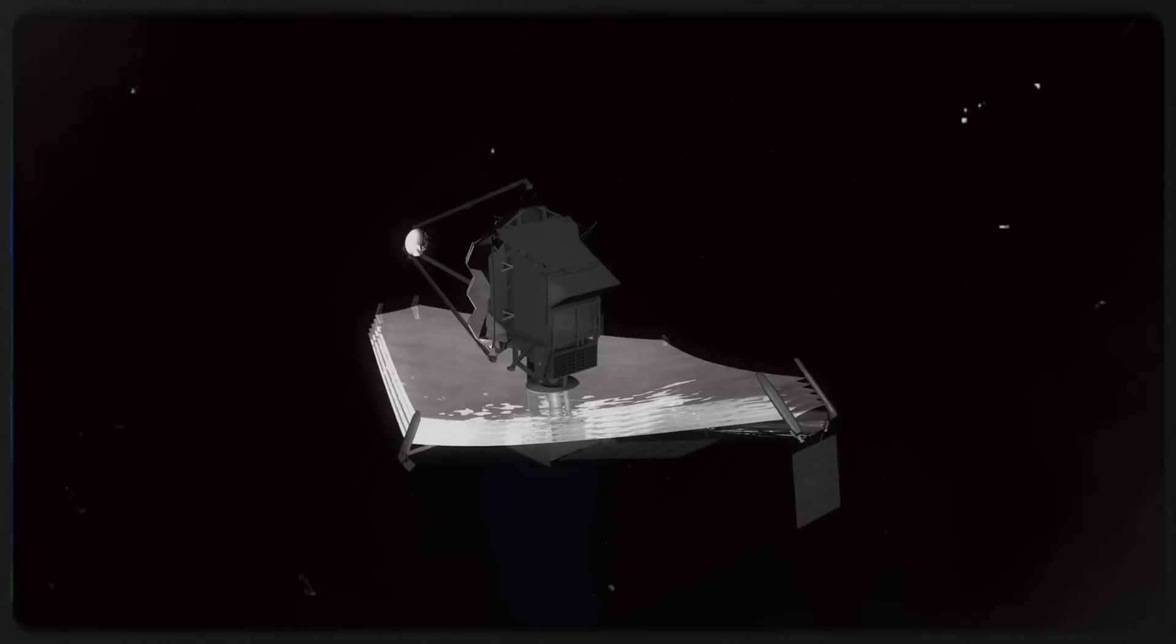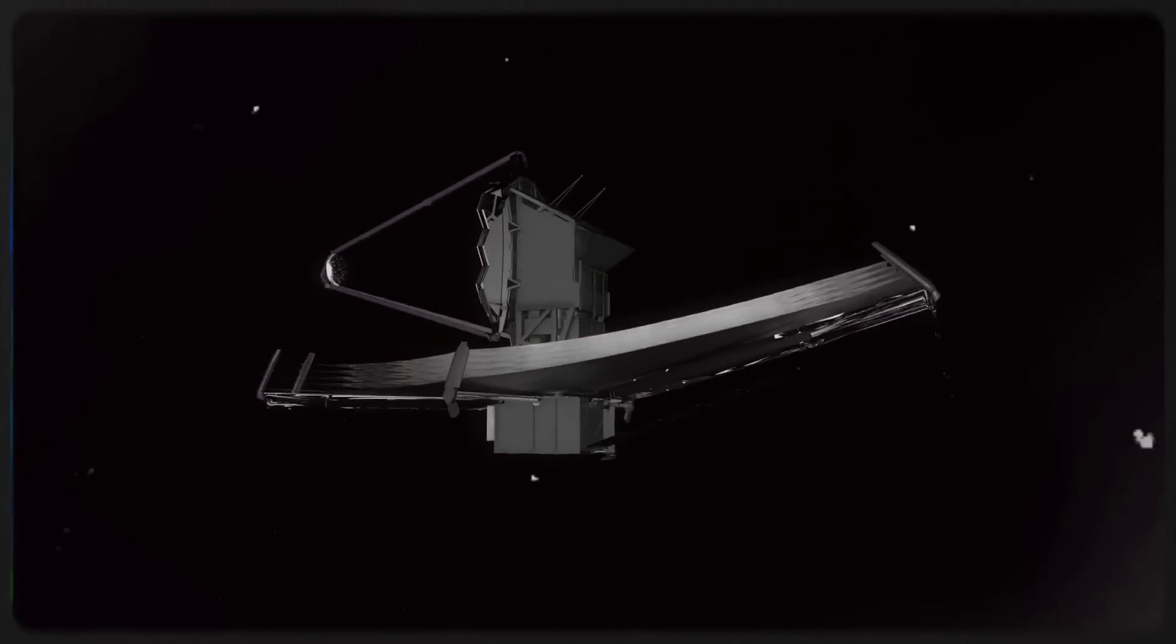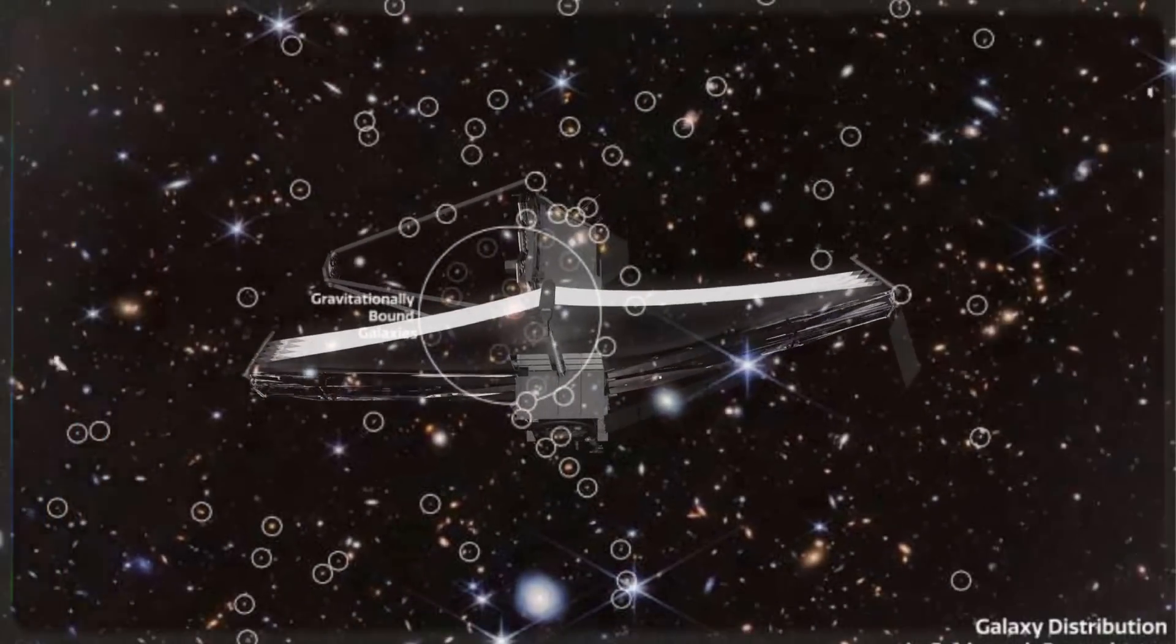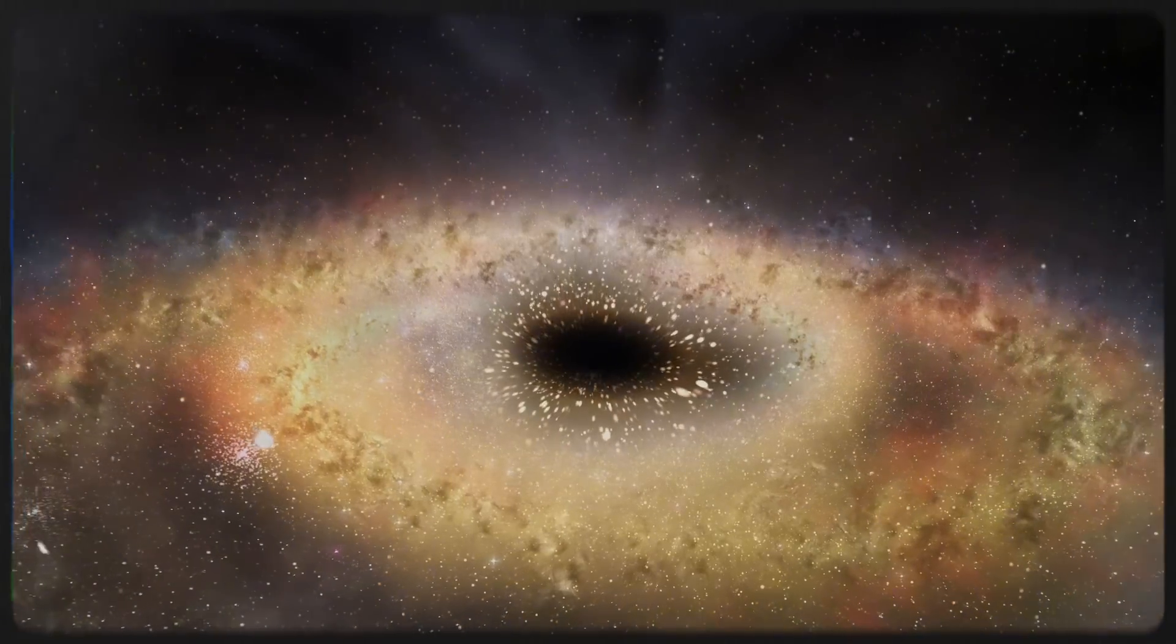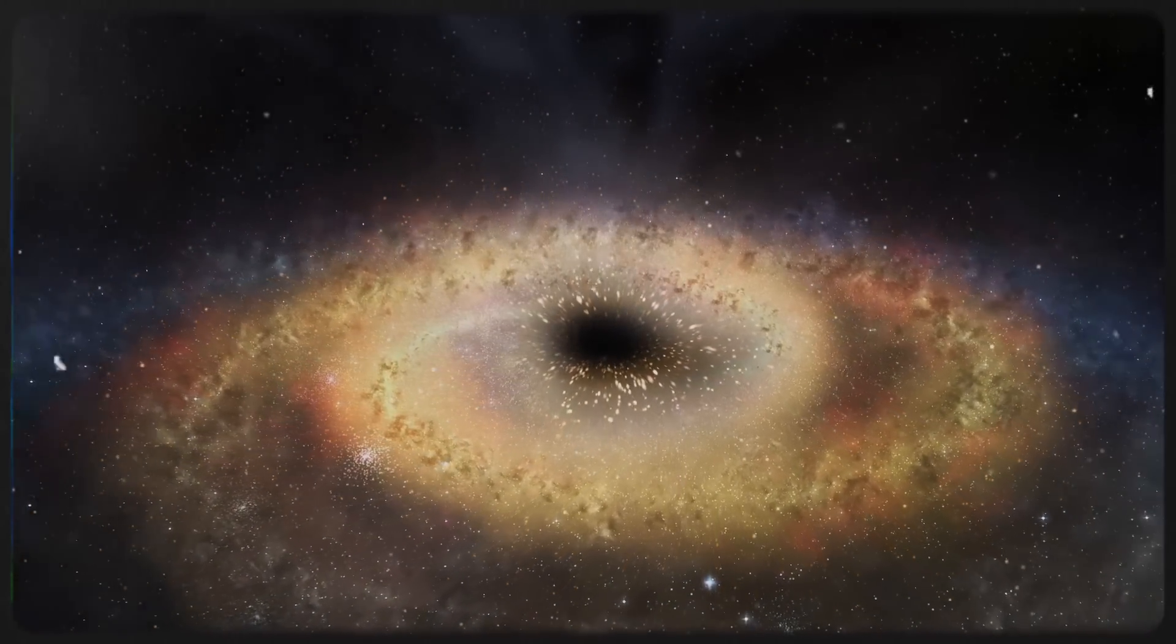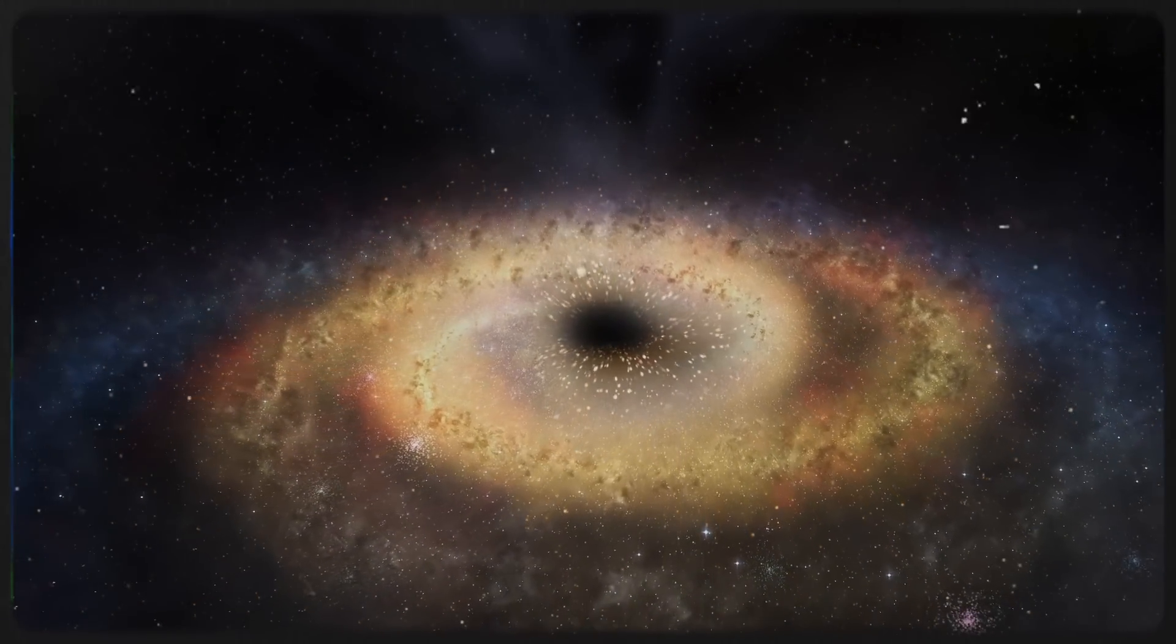A groundbreaking revelation from the James Webb Space Telescope's observations of the distant spiderweb protocluster exposes a striking disparity. Galaxies hosting supermassive black holes have largely halted star formation, while others continue to flourish.